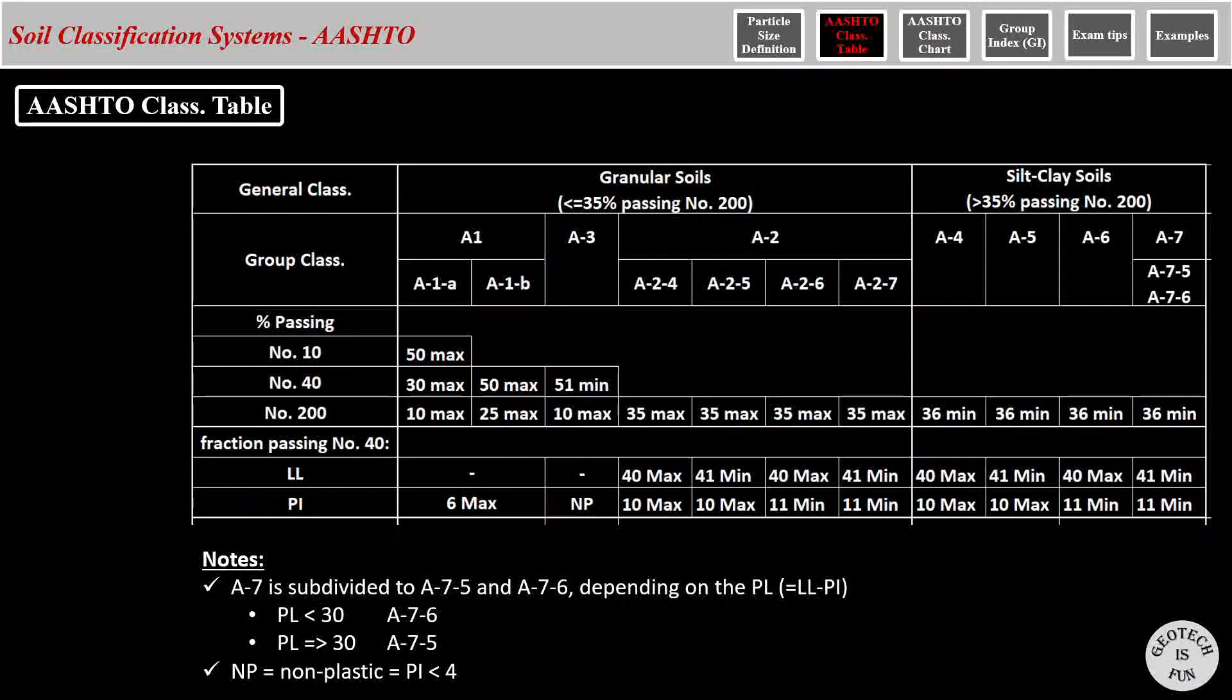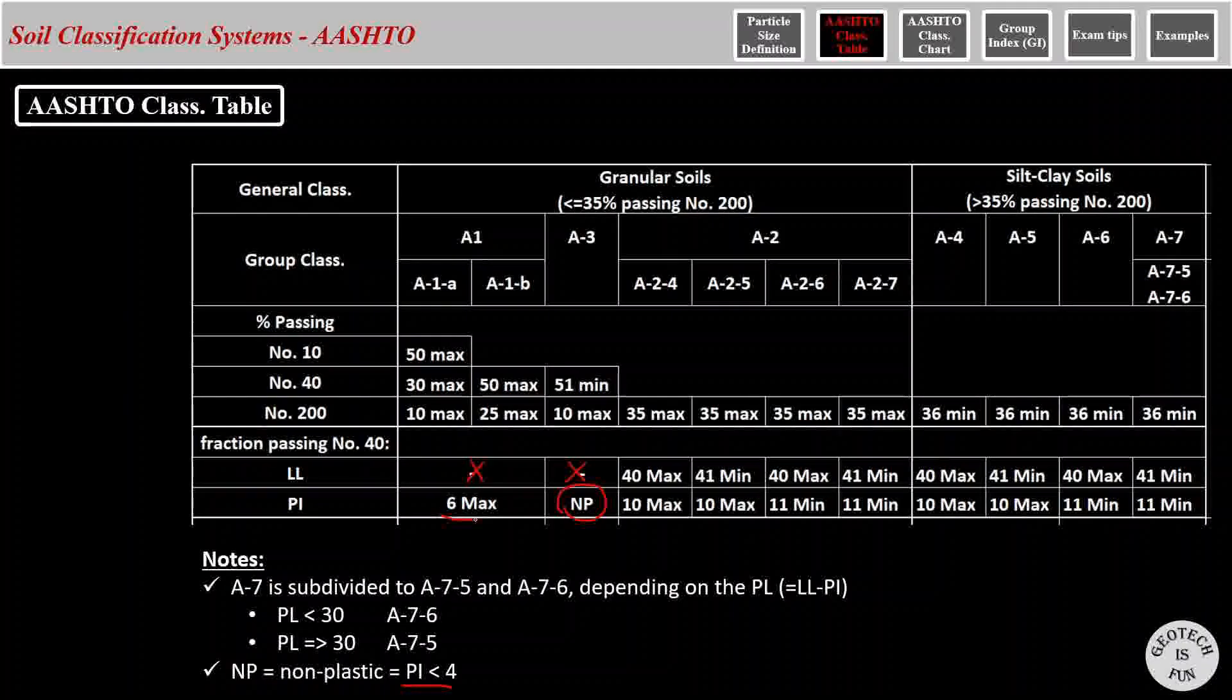Here are a few other points about the plasticity portion of the table. For A-3 and A-1s, liquid limit does not matter. For A-3, PI is non-plastic, which is defined as any PI of less than 4. For A-1s, the PI should be maximum 6.